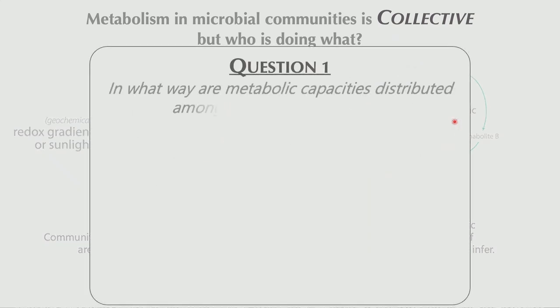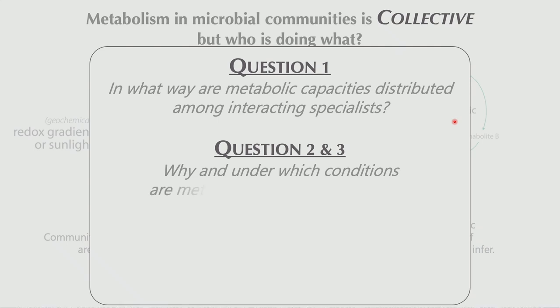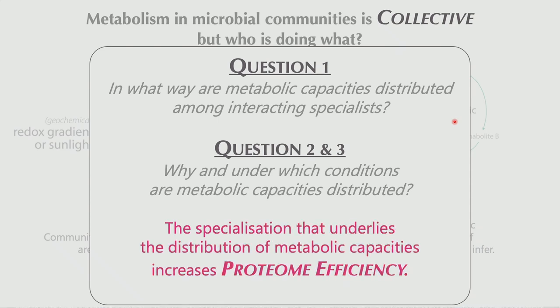These questions are: in what way are metabolic capacities distributed among interacting specialists? Why and under which conditions are the metabolic capacities distributed? And the answer we want to put forward is that this specialization — which underlies this distribution of metabolic capacities — increases the proteome efficiency of the specialists. And this is the perfect moment to explain what I mean by proteome efficiency.